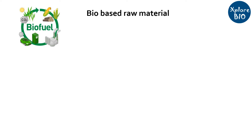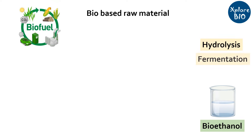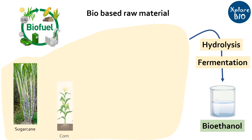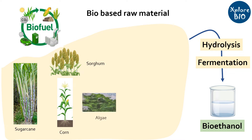Bioethanol is a kind of biofuel which is produced from bio-based raw materials. Bioethanol is basically ethanol produced by hydrolysis and fermentation of sugar that comes from waste of plants such as sugarcane, corn, sorghum, algae and others.